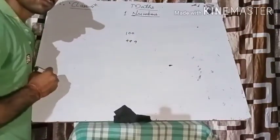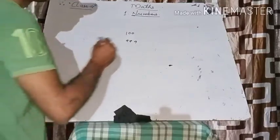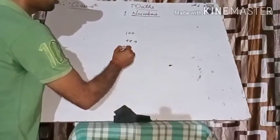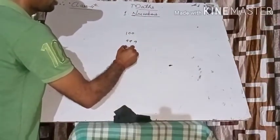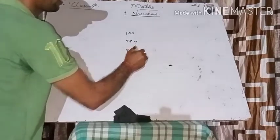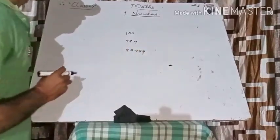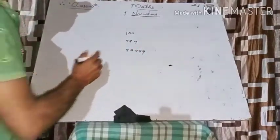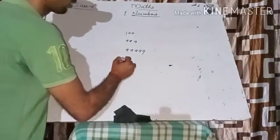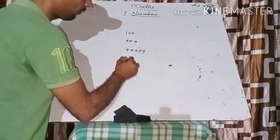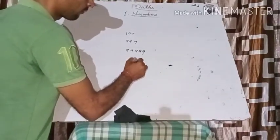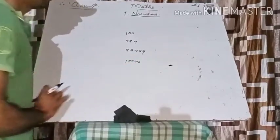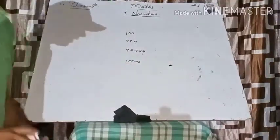If I say write down the greatest five-digit number, then we write 9 five times: 99999. And if I say write down the smallest five-digit number, then the answer is 10000 — that is 1 followed by four zeros, making five digits total.